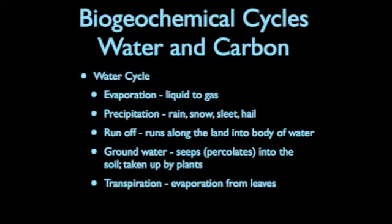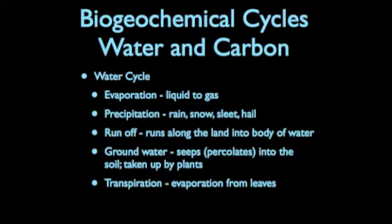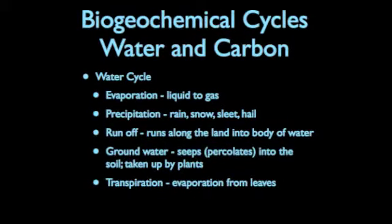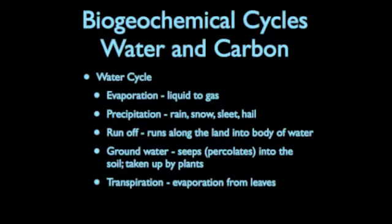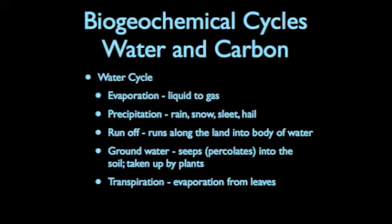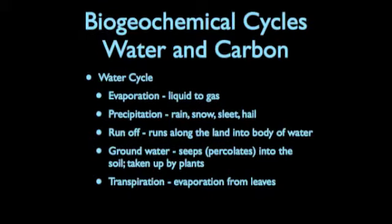The last one is your transpiration. Transpiration is evaporation from the leaves — be very careful between this one and evaporation. Evaporation is coming off water; transpiration is coming off your plants. The one that shows plants with arrows coming up from them is number two. So you should have: one evaporation, two transpiration, four precipitation, five runoff, and six groundwater. Do not worry about the rest of the numbers — they're not important in this section.